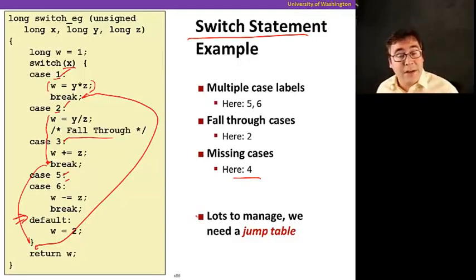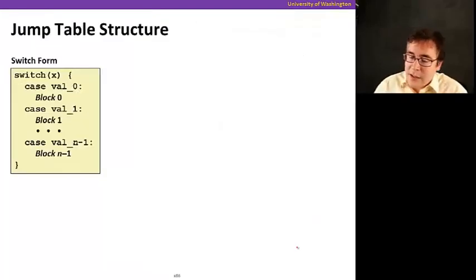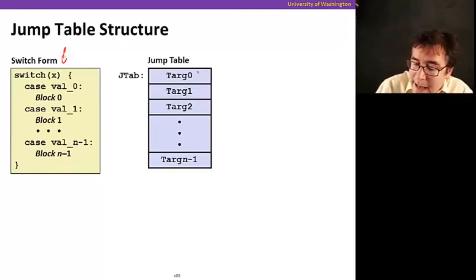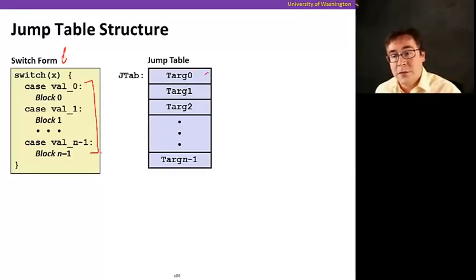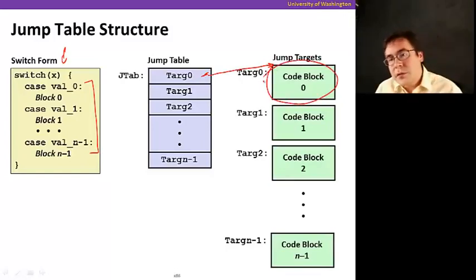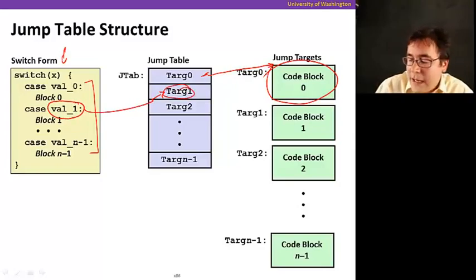While you could implement this with branching structures, it gets really complicated quickly. So another way of implementing this is using what we call a jump table. A jump table works as follows: we have a table with roughly as many entries as the number of cases in our switch statement. In each entry of the table is the address of a code block which corresponds to the code block that has to be executed based on the case's value. For example, if x happens to be val1, we're going to look at the jump table, get the corresponding address, select the start, and that's the code we're going to execute.